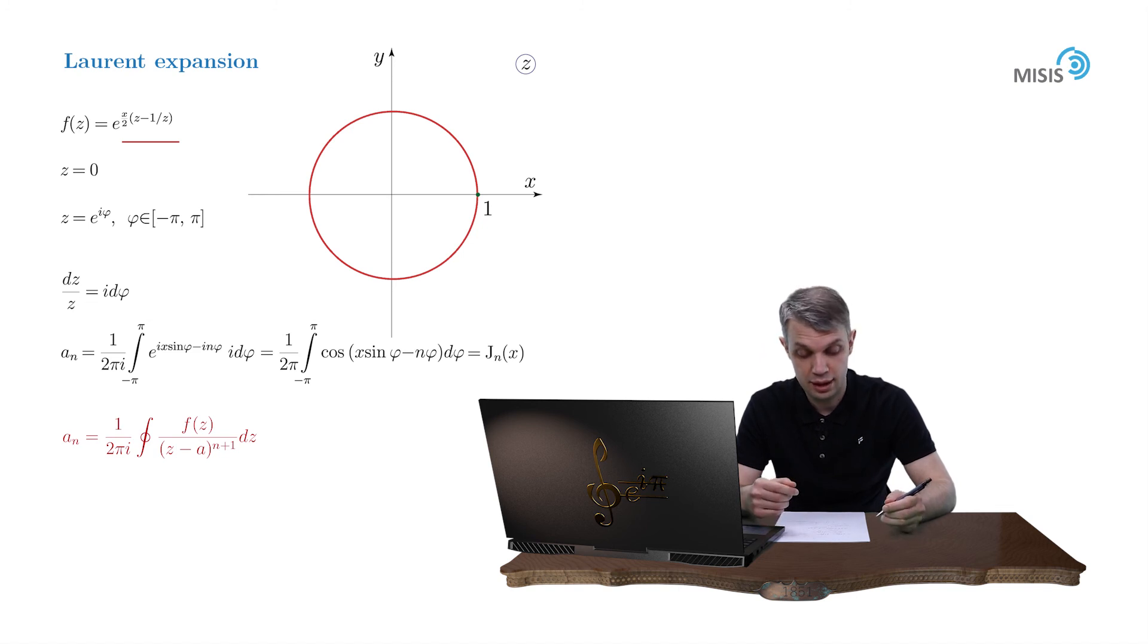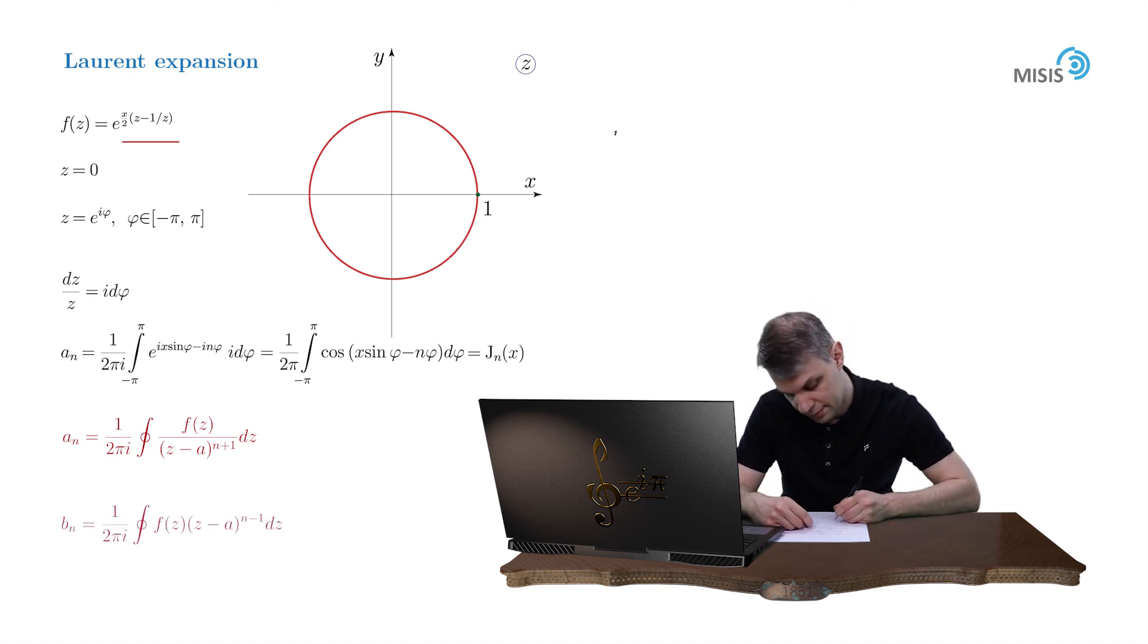And a learned listener will immediately recognize here the integral representation of a Bessel function jn of x. Now coefficients b n are computed in quite a similar way. Substituting our change, we obtain a very similar expression e to i x sine phi plus i n phi i d phi.